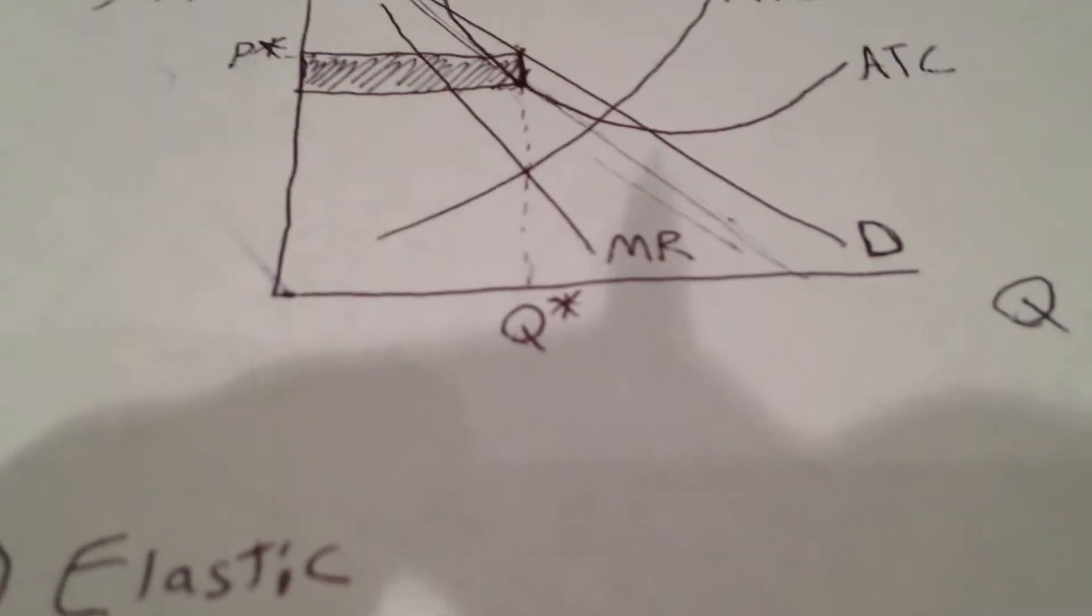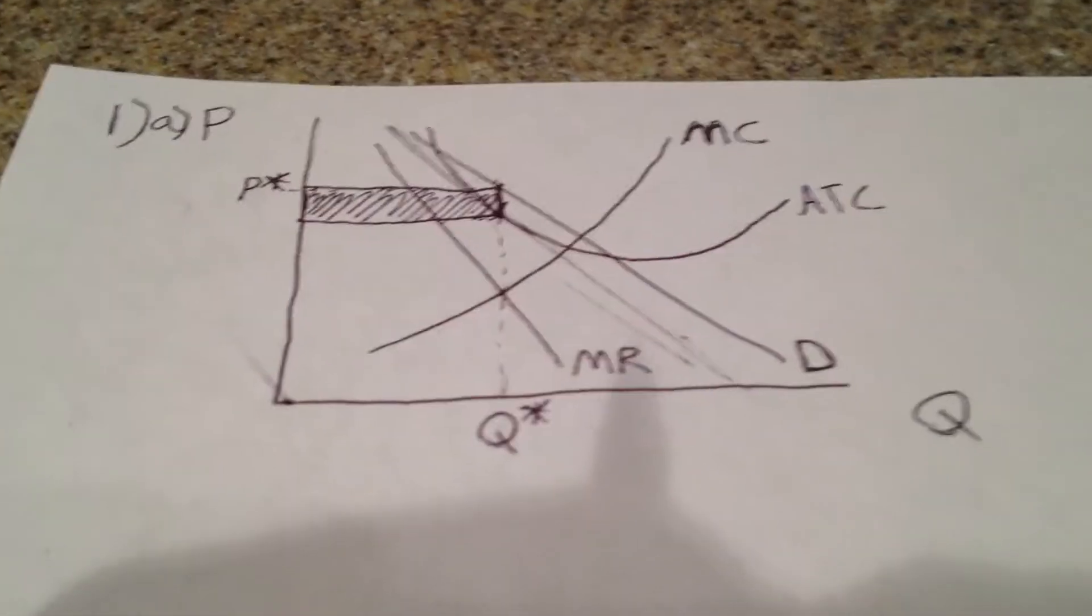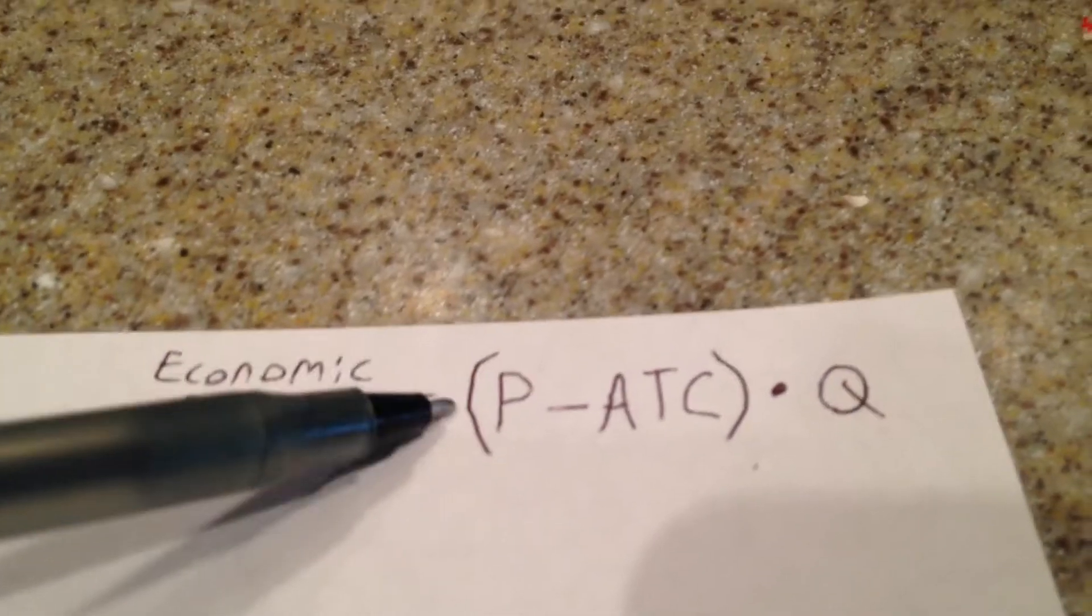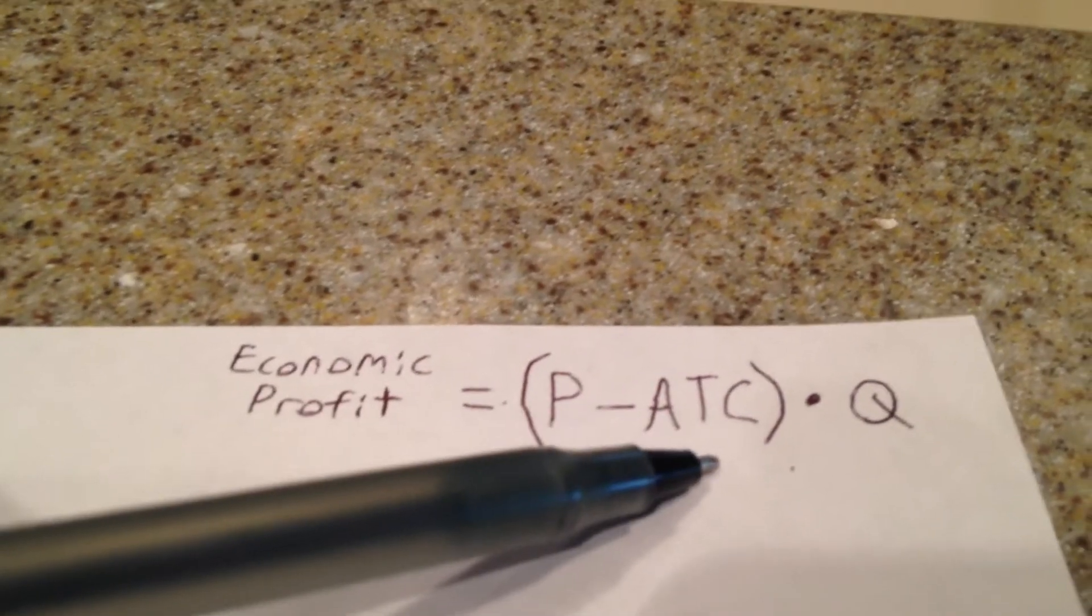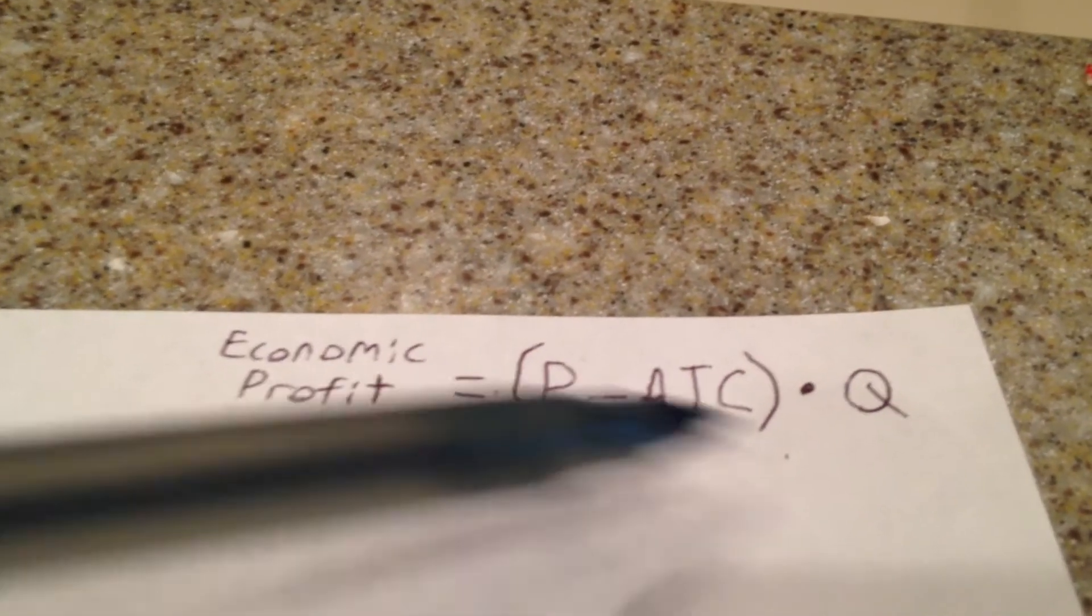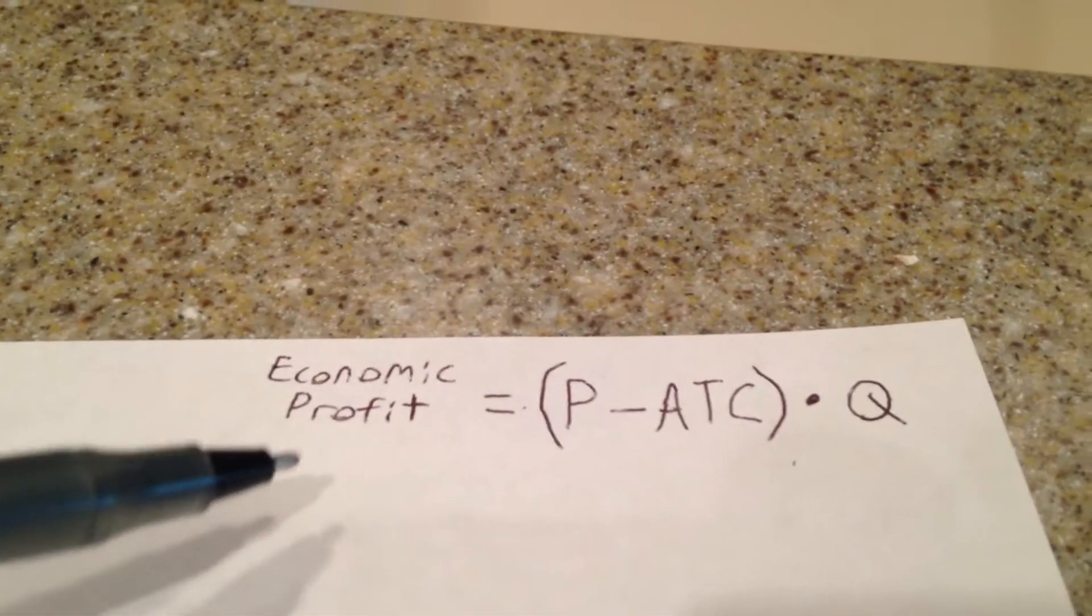This is because as each firm enters the industry, they take away shares of the existing firms. Also remember this, this is important: monopolistically competitive firms cannot make economic profit in the long run. That's something you need to know. And so because of this, we know if price is going to equal the average total cost curve, this quantity becomes zero. So multiplied by that, the economic profit is zero. So there's no profit in the long run, which will help us find the answer to D.